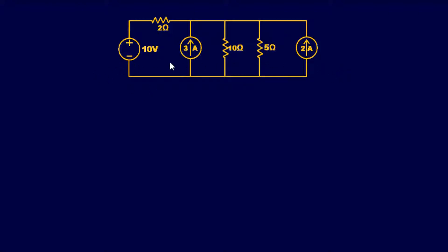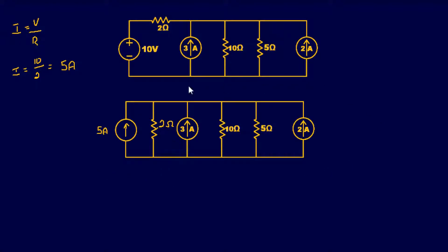If I can get all these into one current source with all resistors in parallel, I can knock this out quickly. So let's convert this voltage source and series resistor into a current source in parallel with that resistor. Using Ohm's law: I equals V over R, so 10 volts over 2 ohms gives us 5 amps. So we now have a current source of 5 amps in parallel with 2 ohms. Keep in mind the polarity of the voltage source when determining the current direction — the positive terminal is up here, so the arrow points the same direction.